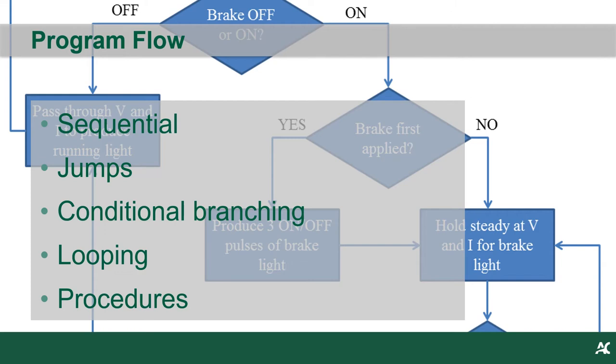Conditional branching, where the code calls for a decision to be made, which will determine what is the next operation to be executed. Looping, where I have a set of operations that we want to repeat until a condition is reached. And procedures, which allow us to group operations that we might want to call on at different points in our programs.